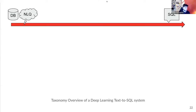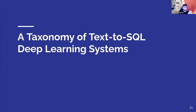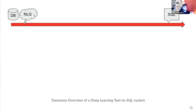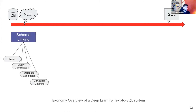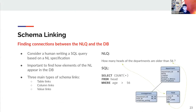Now that we have a good grasp of the problem and the available benchmarks, we're going to present a taxonomy of text-to-SQL deep learning systems. We'll start from the inputs the system accepts and go through all the important steps and design decisions needed to create such a system.